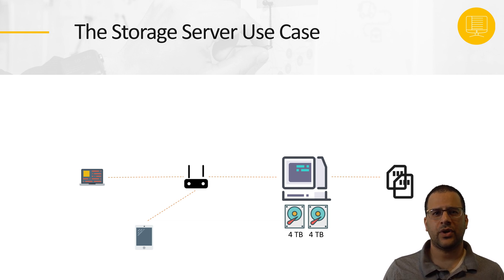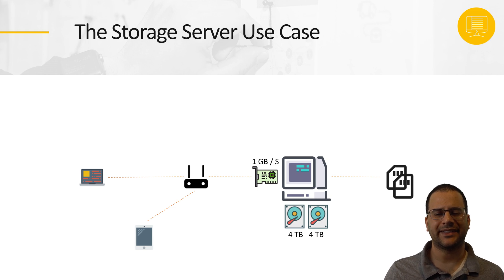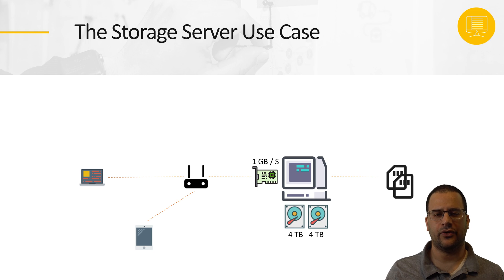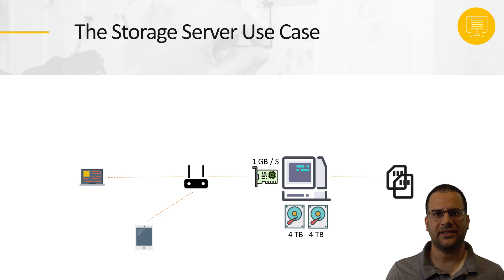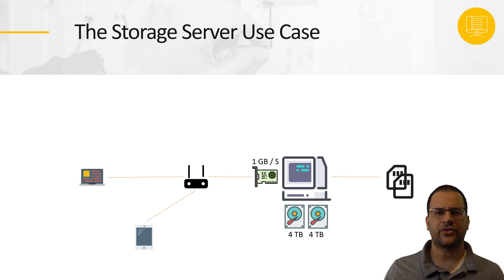This storage server also has a network connection with a speed of 1 gigabit per second. That means that this deployment of my storage server — which is made of a single server with two hard drives totalling at 8 terabytes of data and a network connection of 1 gigabit per second — can store up to 8 terabytes of information and interact with clients at a total speed of 1 gigabit per second.